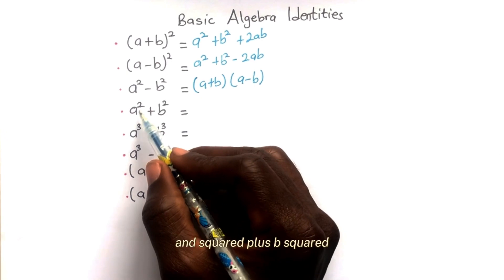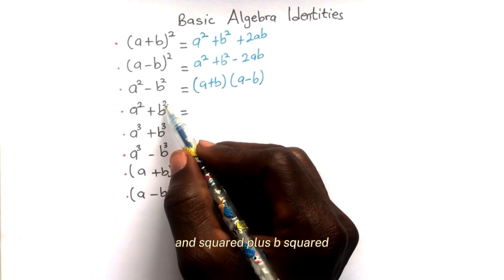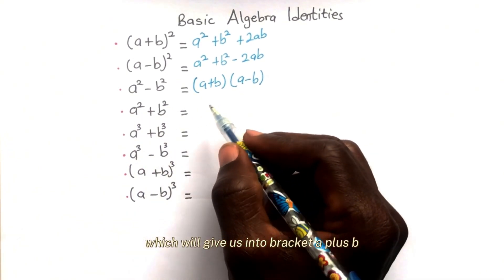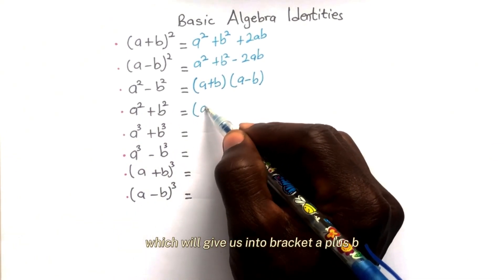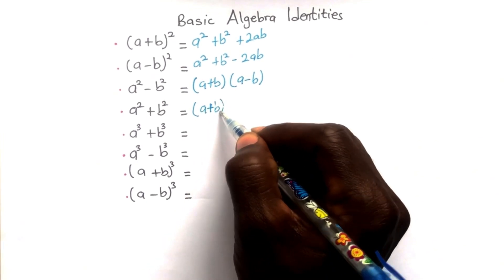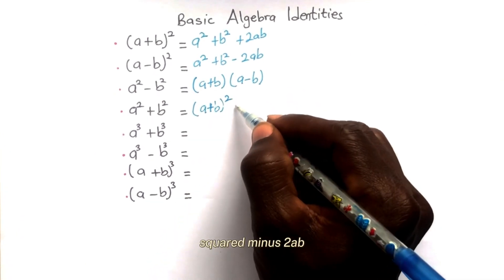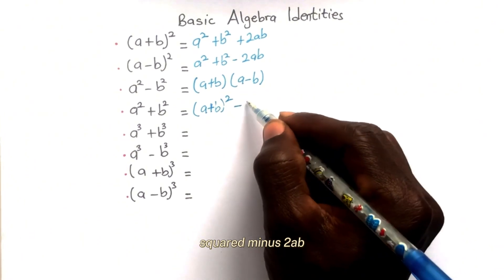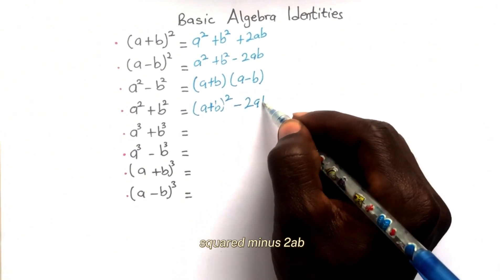a squared plus b squared will give us (a plus b) squared minus 2ab.